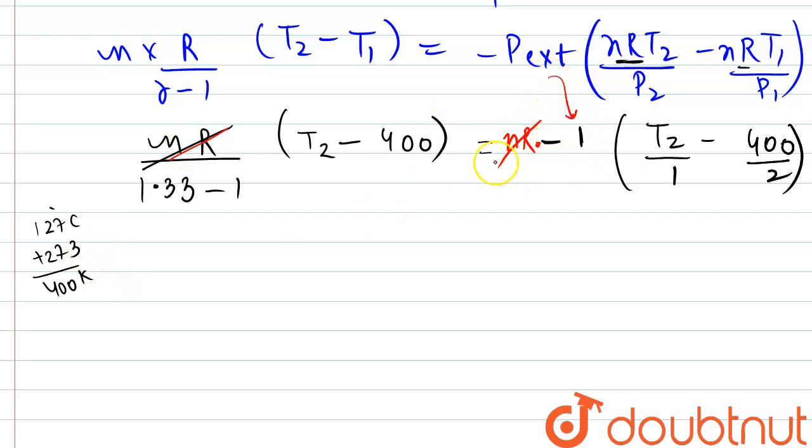Now from here on solving, we will get 3T2 minus T1 is equal to minus 1 times T2 minus 200. So again we can put the value of T1 again here also.